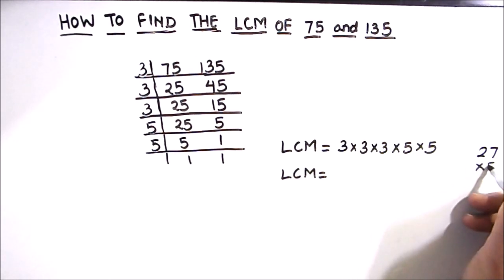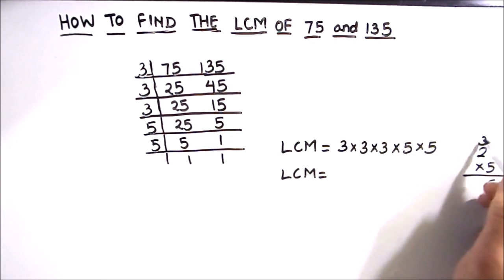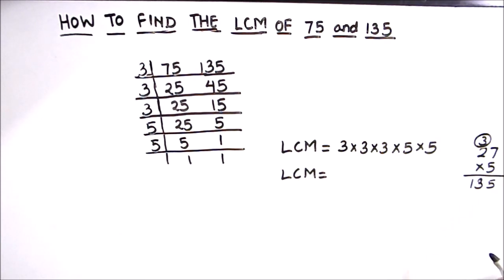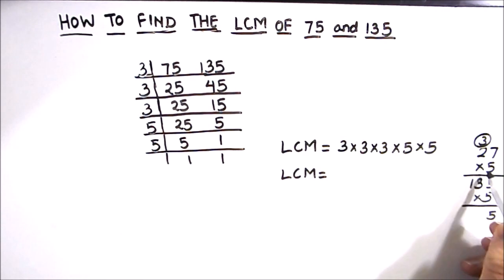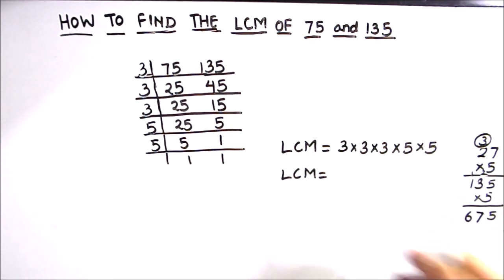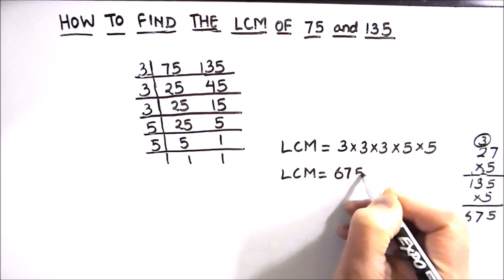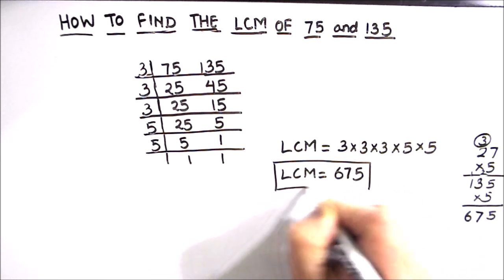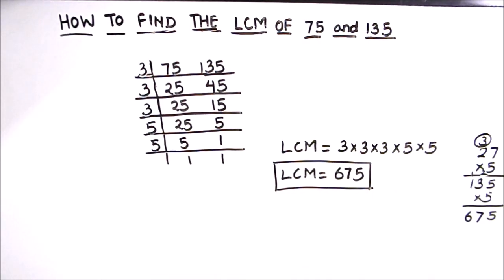Calculating: 3 × 3 × 3 = 27, and 27 × 5 = 135. Then 135 × 5 = 675. So the LCM of 75 and 135 is 675.